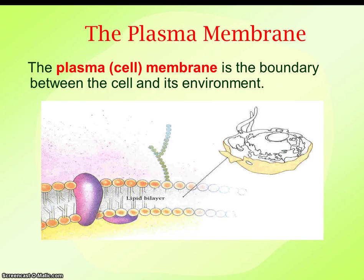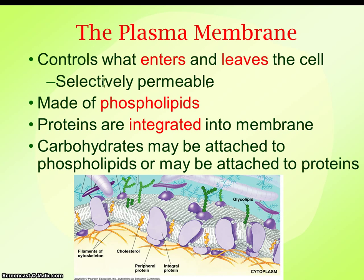First, we're going to be looking at the cell membrane. We've talked about the cell membrane a little bit before when we looked at lipids and macromolecules. The cell membrane, this plasma membrane, is kind of like the boundary that keeps the internal processes of the cell separate from what's happening outside the cell — it's kind of like the skin of the cell. The plasma membrane helps control what enters and leaves the cell. It's considered semipermeable because it is made of phospholipids. It has a hydrophilic head and hydrophobic tails, which means it can allow certain things to move through while keeping other things out. That's where it gets the semi- or selectively permeable name from.